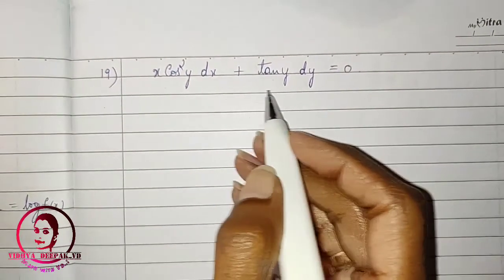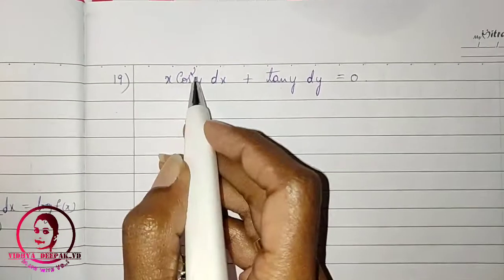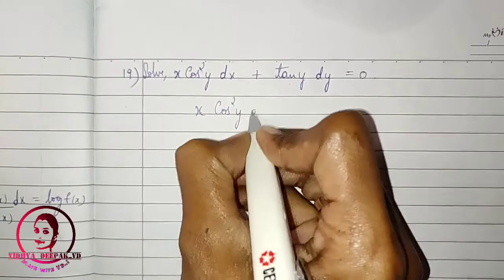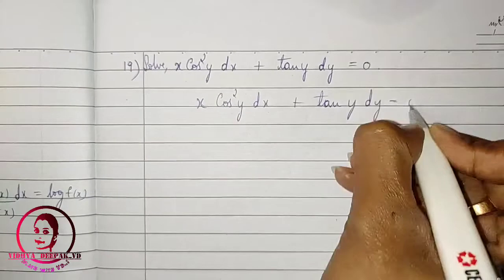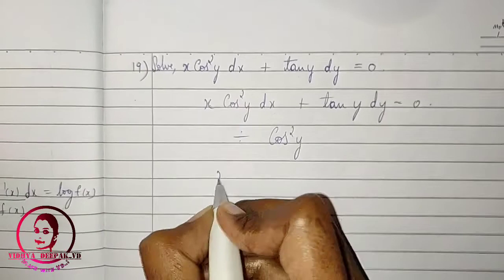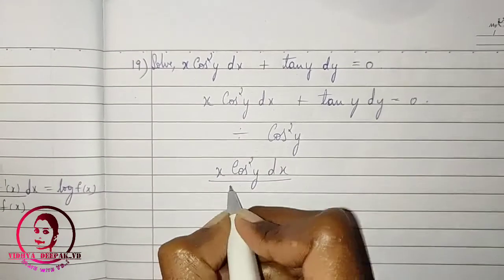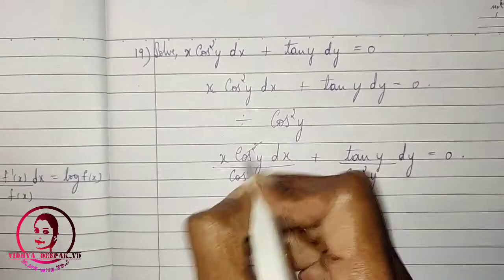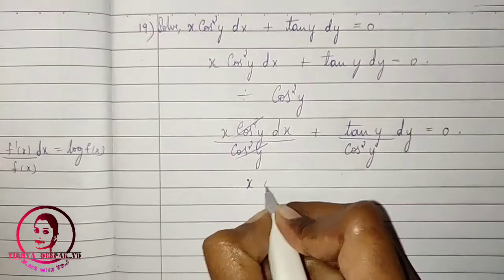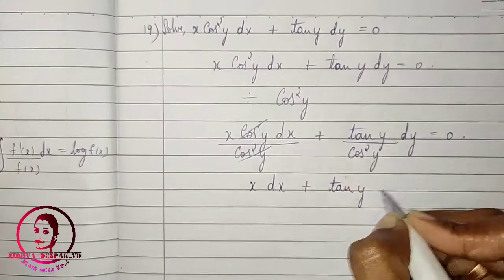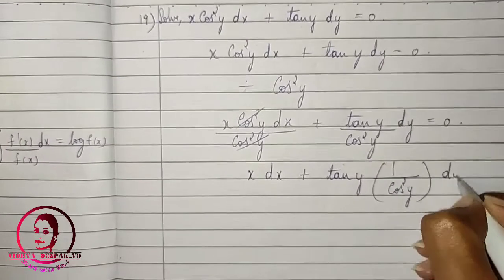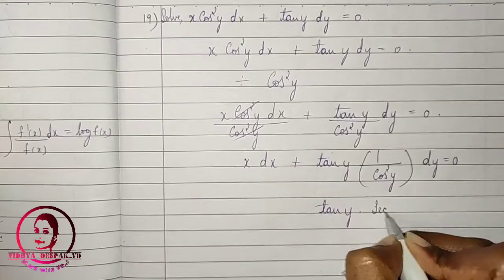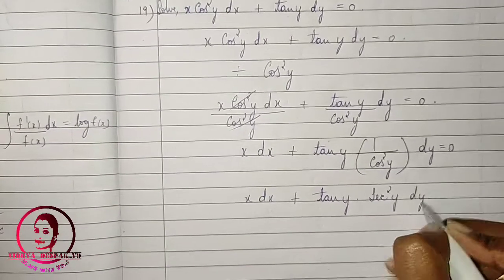Next question: x·cos²y·dx + tan y·dy = 0. To separate variables, divide the entire equation by cos²y: x·dx + tan y/cos²y·dy = 0. Since 1/cos y = sec y, we have tan y/cos²y = tan y·sec²y. So the equation becomes x·dx + tan y·sec²y·dy = 0.